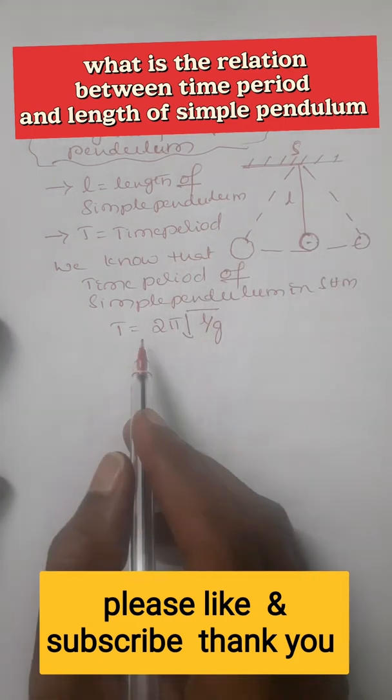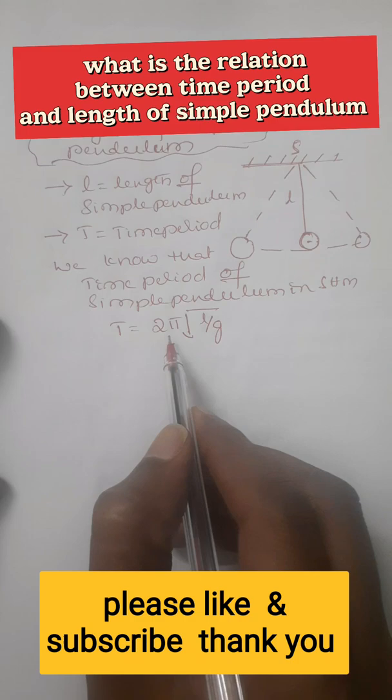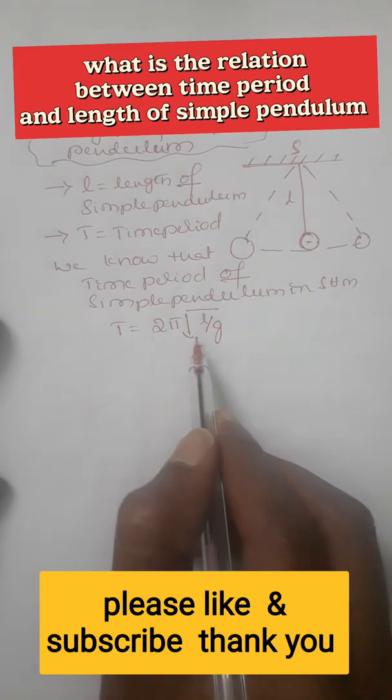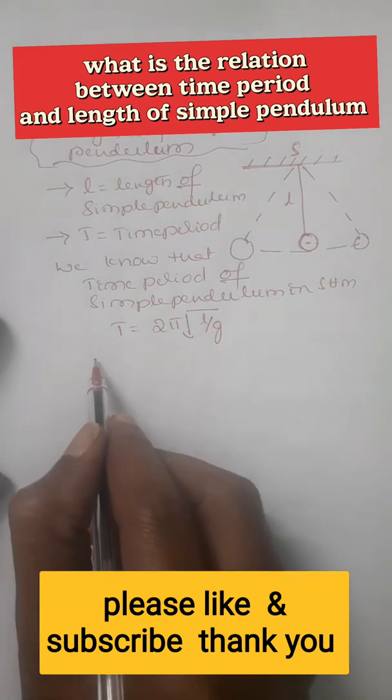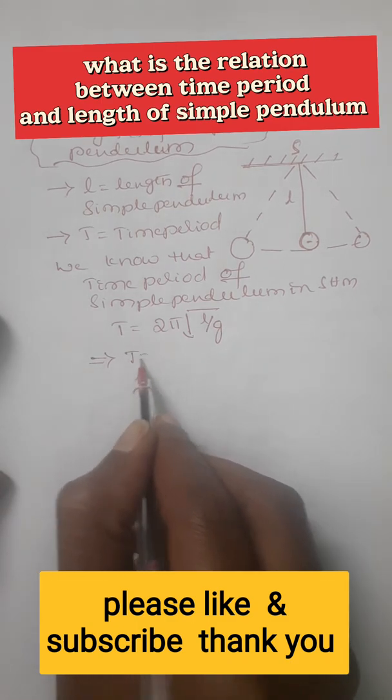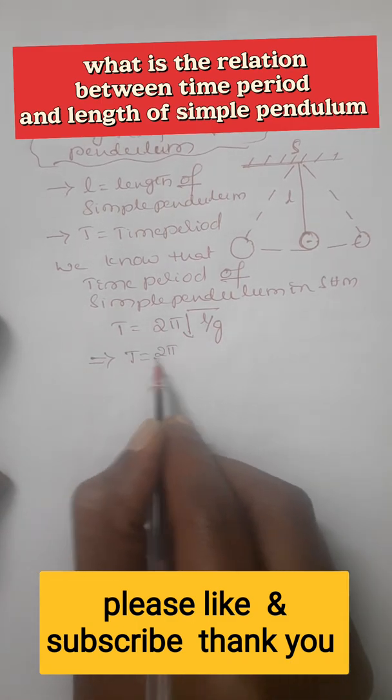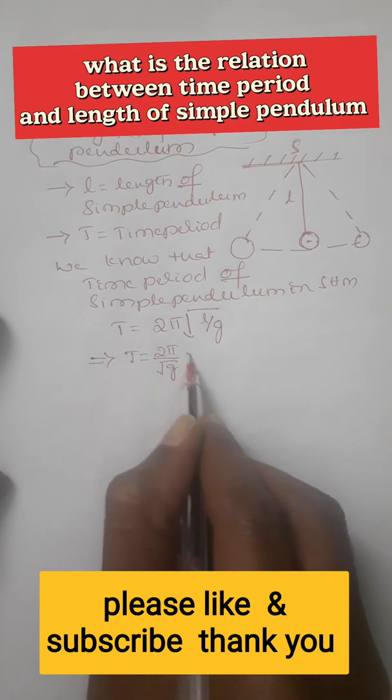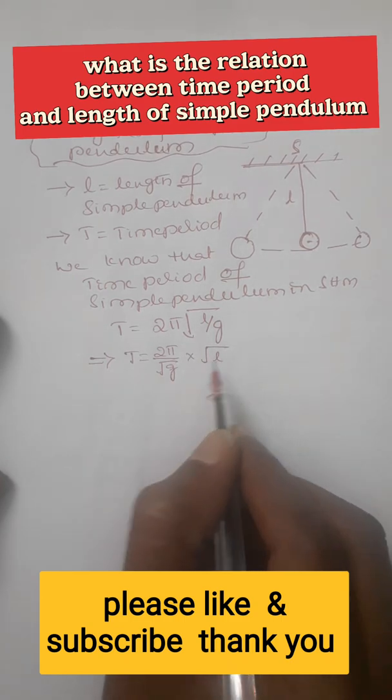We know that the time period of a simple pendulum in simple harmonic motion is t equals 2π times the square root of l by g. This can be written as t equals 2π by root g times root l.